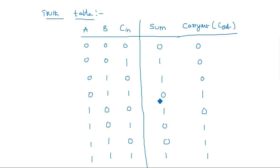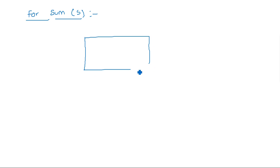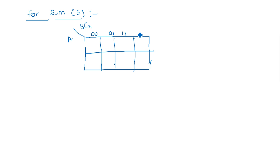This is the truth table. Our aim is to design the logical circuit — we know the inputs, and we need to derive the output logic expressions. We need to derive the expression for Sum (S) and Carry Out (Cout). For the Sum, we are going to draw the K-map. Since there are three inputs, we use a three-variable K-map with A, B, Cin in Gray code representation.